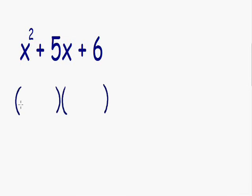On the left side of each parentheses you are just going to place an x. This is because our first term is an x² term. If you multiply these two x's together, x times x gives us our x².